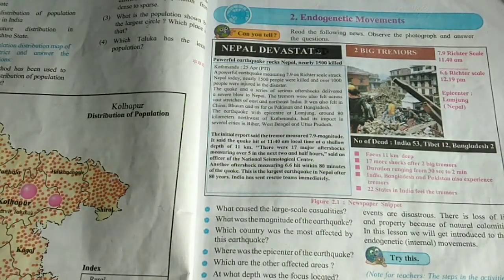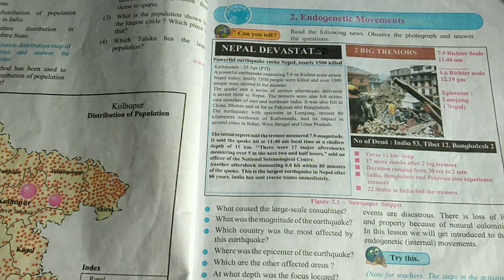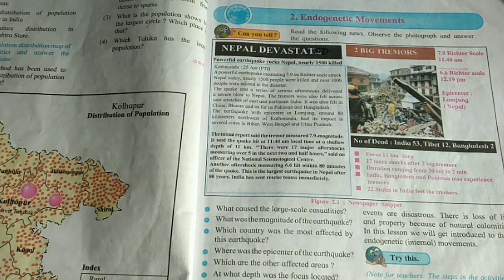Some people are not too familiar with the endogenic process, as there are so many things it can mean. Because of endogenic processes, so many things have formed here on earth. The endogenic processes the earth has gone through have made it possible for different landforms to emerge. There are so many landscapes that may not have formed without endogenic processes that occurred in the past.